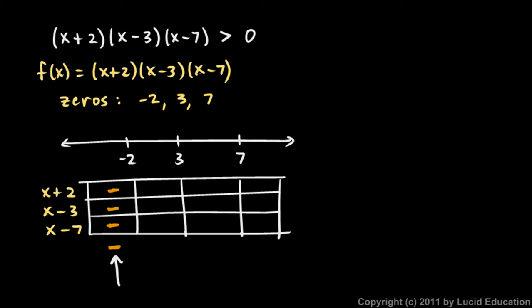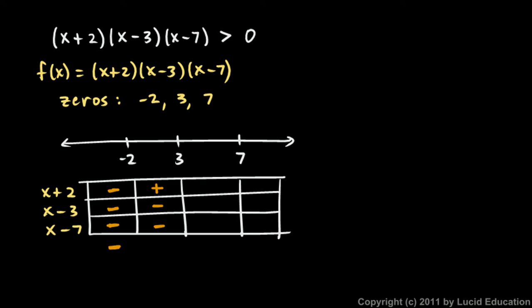A negative times a negative times a negative gives you a negative result. So in this region, for all these x values, the polynomial is negative. Now between negative 2 and positive 3: x + 2 is positive, x − 3 is negative, and x − 7 is negative. So we're multiplying a positive times a negative times a negative, which gives us a positive number.